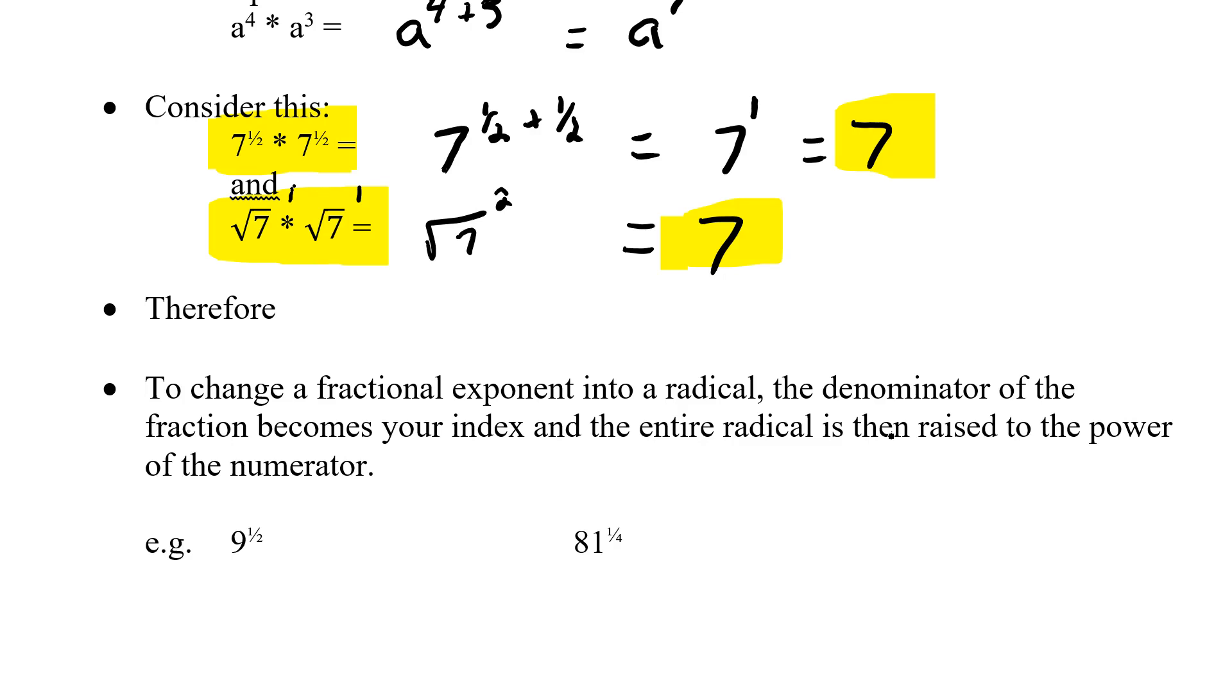So let's see how this works. 9 remains my base, so I keep the 9. I open up the root sign. Now the denominator becomes the index, so it's the square root of 9. And the 1 becomes my power on my base. So I essentially have the square root of 9. And of course, we know the square root of 9 is 3. So 9 to the 1 half power is 3.